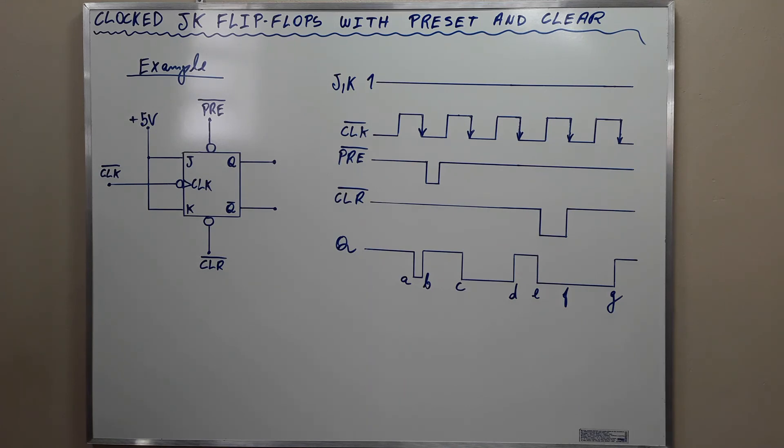And finally, at point G, the negative going transition of the clock will cause the output to toggle again to high.